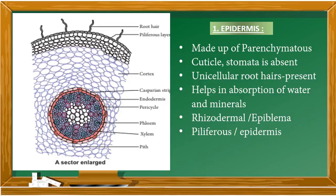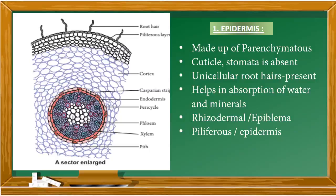The outermost layer is the epidermis. You find some hair-like structures marked in the diagram as root hair. Looking at the shape of the cells, they are very thin cells. Cells which are thin are parenchyma, so the epidermis is made up of parenchymatous cells. This layer is otherwise called rhizodermal layer, epiblema, or philliparous layer.